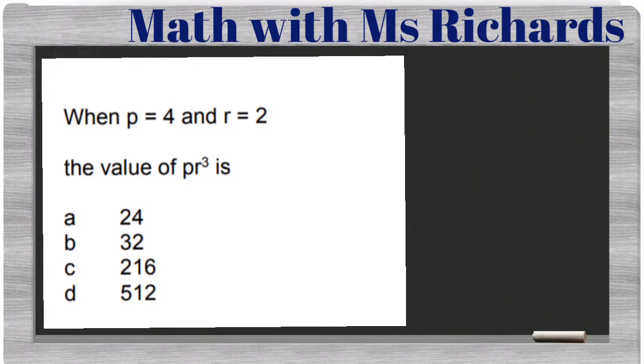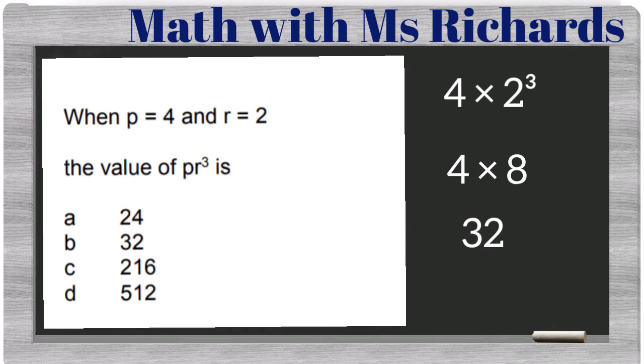And another one. p is 4, r is 2. We just need to substitute these values. So we have now p times 2 cubed, because pr means to multiply, right? So 2 cubed now is what? Make sure you know your cubes, your squares, and your exponentials, because 2 to the third is not 6, but 8. And 4 times 8 is 32. So your answer there is definitely b.